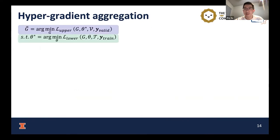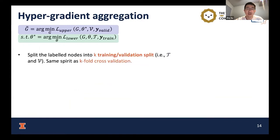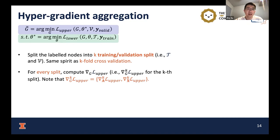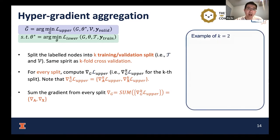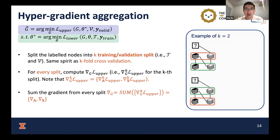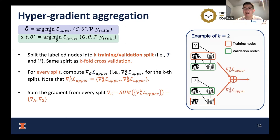In our practical applications, we split the labeled nodes into K training-validation splits to eliminate bias from any specific split, following the same spirit as K-fold cross-validation. For every split, we compute the hypergradient using the method introduced previously, then sum the hypergradients from every split into our final aggregated hypergradient. For example, if we split the data into two training-validation splits, we compute the hypergradient from each separately and aggregate them to get our final hypergradient.